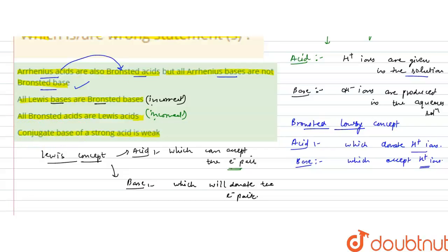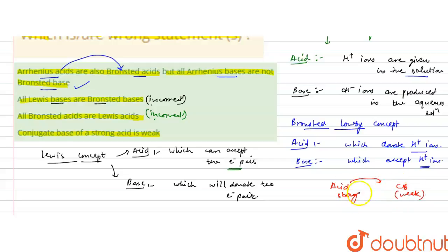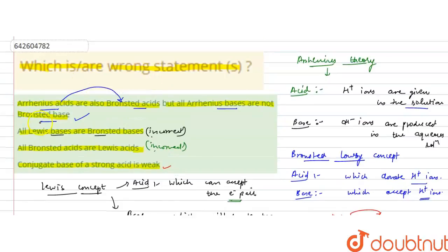The last statement is: the conjugate base of a strong acid is weak. Yes, this is true according to Bronsted-Lowry theory — if an acid is strong, its conjugate base will be weak, and if a base is strong, its conjugate acid will be weak. This is a correct statement. So the wrong or incorrect statements are B and C. The answer is options B and C.